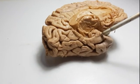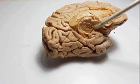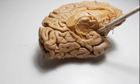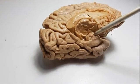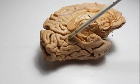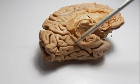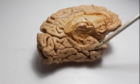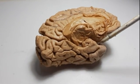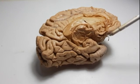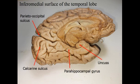At the anterior end of the parahippocampal gyrus is the uncus. If you cut open the parahippocampal gyrus, you will be able to identify the hippocampus. These parts contribute to form the limbic system.